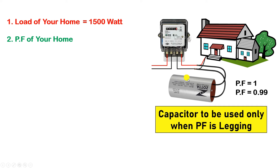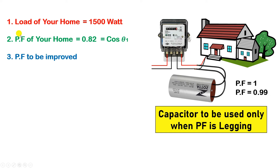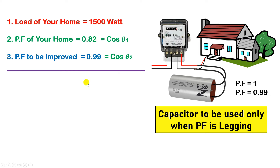For example, suppose our home has 1500 watt (1.5 kW) load connected. Second, what is the current power factor — suppose it is 0.82, which is lagging, denoted as cos theta 1. Third, how much do we want to improve the power factor — suppose we want it to be 0.99, denoted as cos theta 2. Now we need to find theta 1 and theta 2.